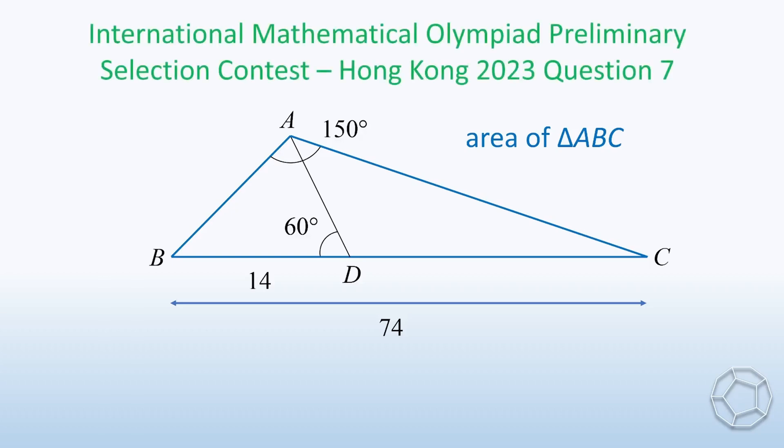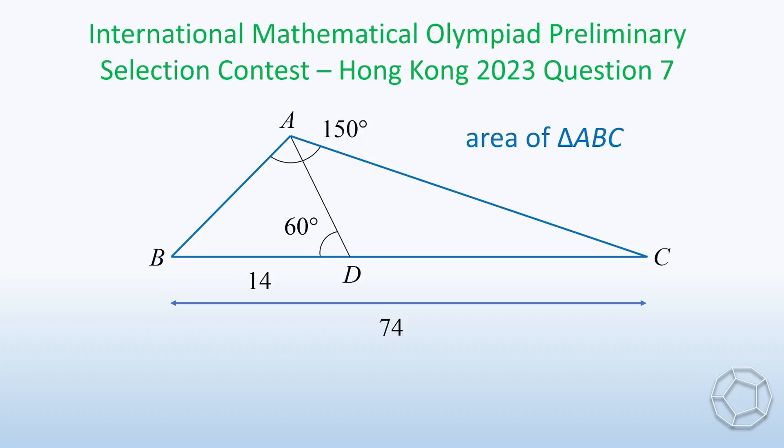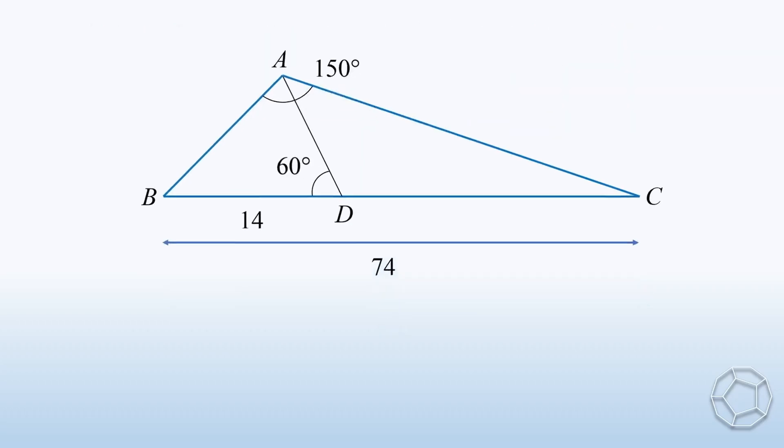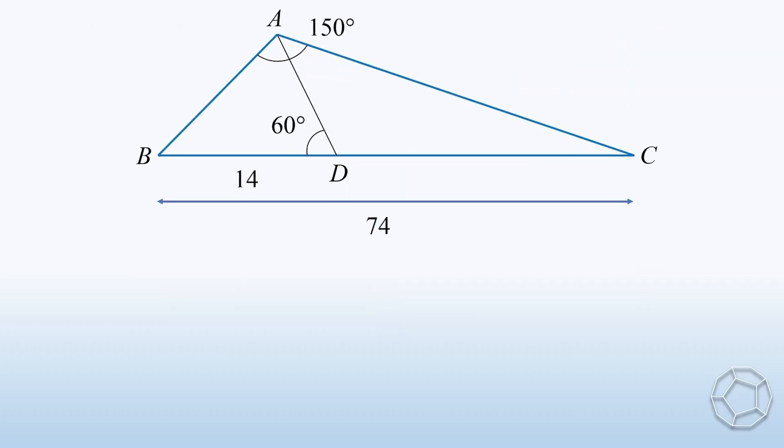This question is actually International Mathematical Olympiad Preliminary Selection Contest, Hong Kong 2023, Question 7. What makes this question interesting is that the given conditions are simple enough. However, it takes a little bit more thought to solve it. And indeed, we don't have to construct any extra straight lines. What we use in this video are two simple tools in trigonometry. You will see that in a second.